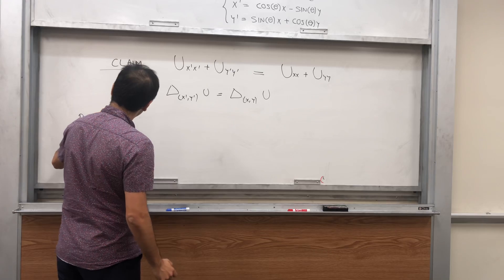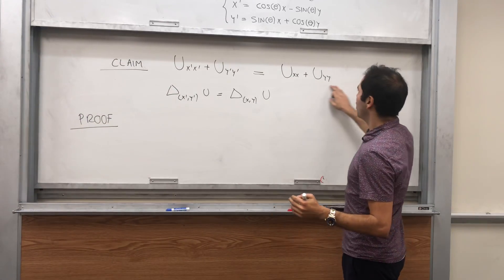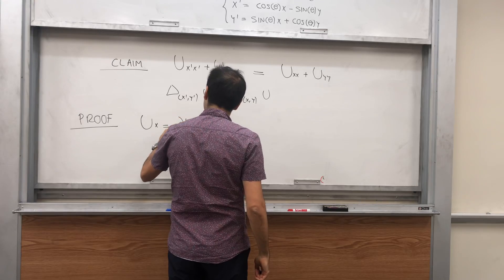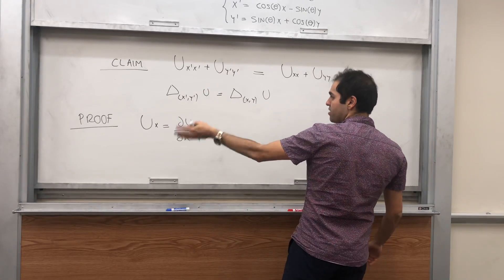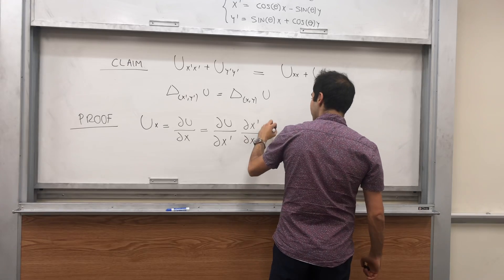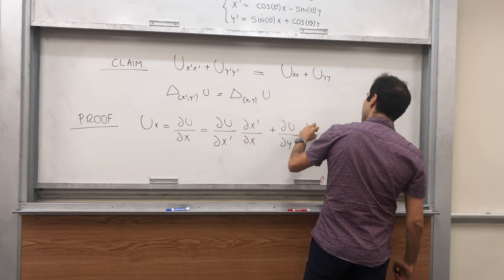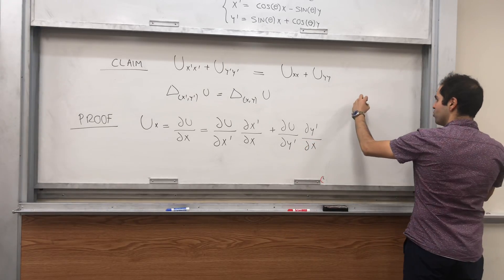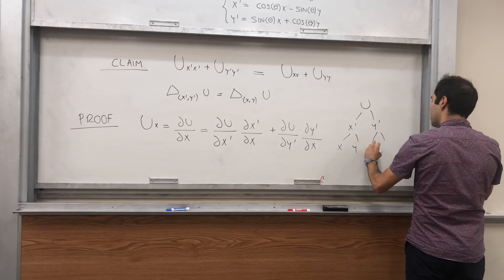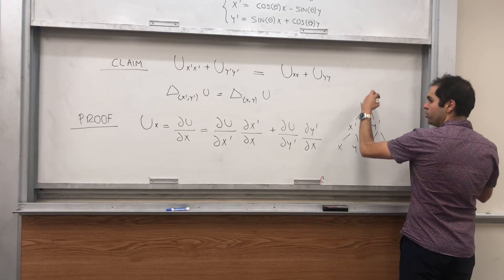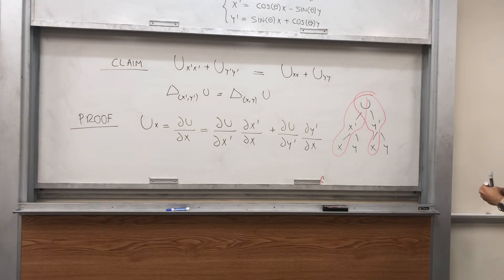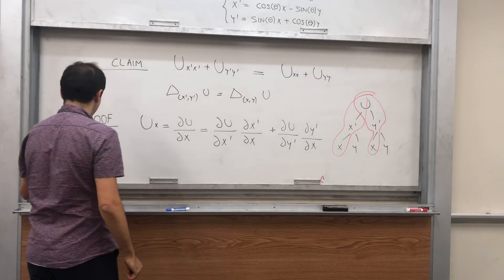So to prove this, we want to start with the left side and end up getting the right side. So u_x is partial u partial x. Since u depends on x prime and y prime, it's partial u over partial x prime times partial x prime over partial x, plus partial u over partial y prime times partial y prime over partial x. So u_x is u_x' times partial x' over partial x, plus u_y' times partial y' over partial x.